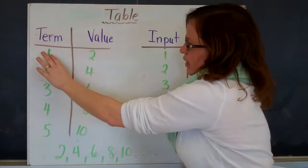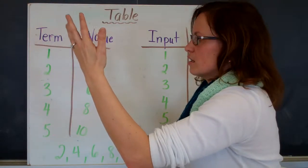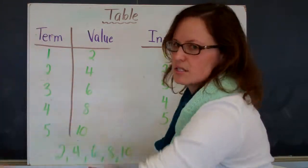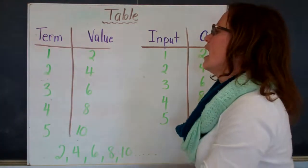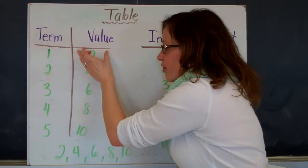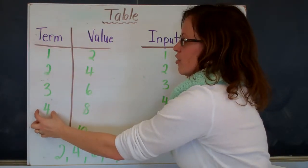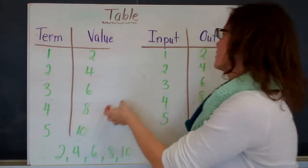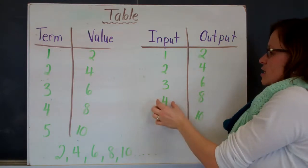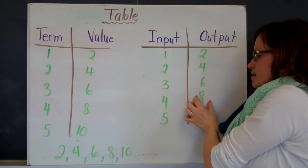The term, or the input, is just talking about the number in the sequence — is it term 1, term 2, term 3, term 4, term 5? Even term 712? And the value just tells you the number value of that term. So the value of the fourth term is 8, and the same thing here: the output of the fourth input is 8.